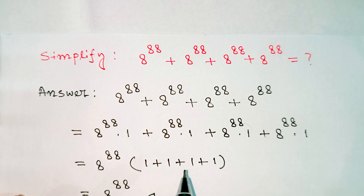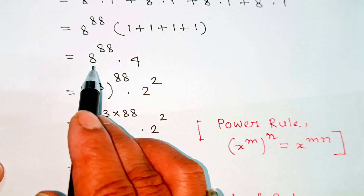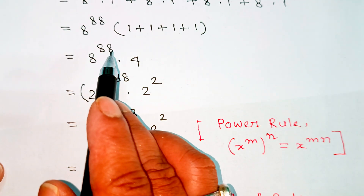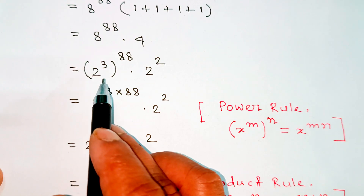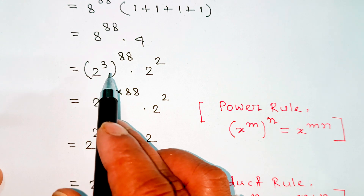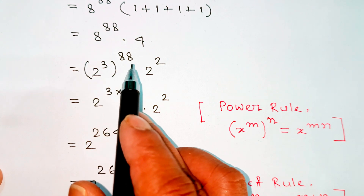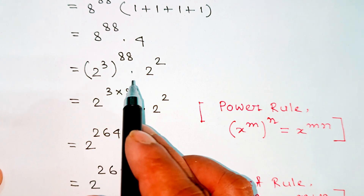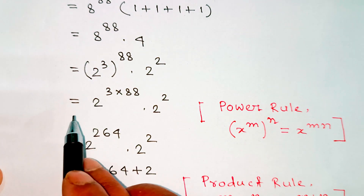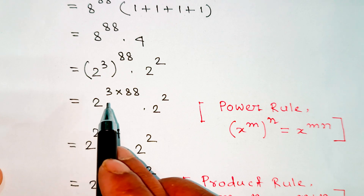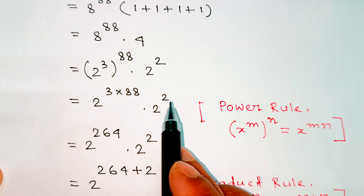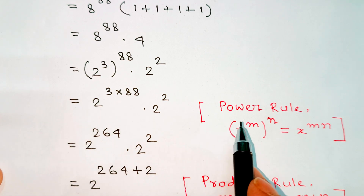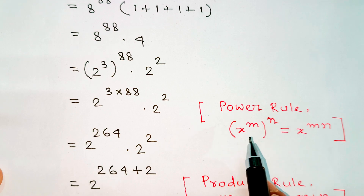1 plus 1 plus 1 equals 3, so we get 8 power 88 into 4. Now, 8 equals 2 cubed, so this becomes 2 to the power 3, raised to the power 88, into 2 squared. Applying the power rule: x to the power m to the power n equals x to the power mn.